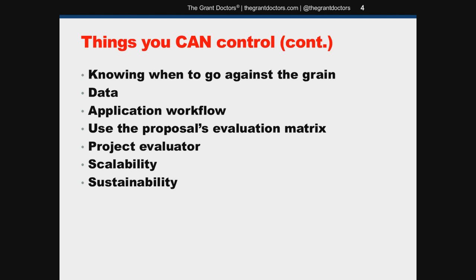The evaluation matrix. When you're going through your RFP, don't just respond to the questions in the application — flip to the back of the RFP and take a look at the evaluation matrix to see what the reviewers will be considering. A lot of times they spell it out for you. Take a look at the evaluation matrix and craft your responses accordingly. Many times the evaluation matrix will offer hints on details you should provide in your narrative that maybe you hadn't considered.